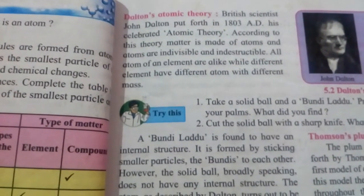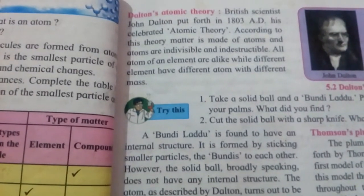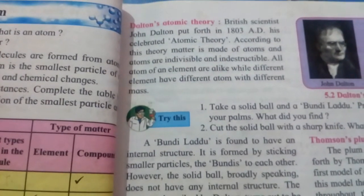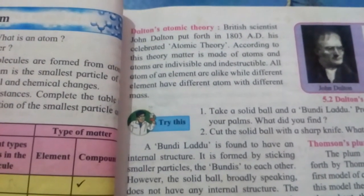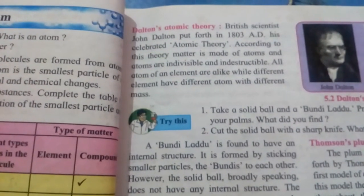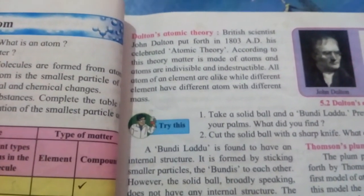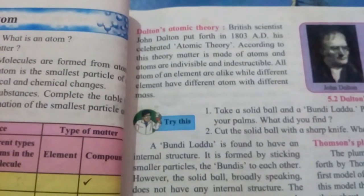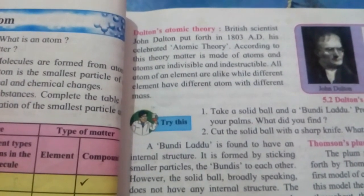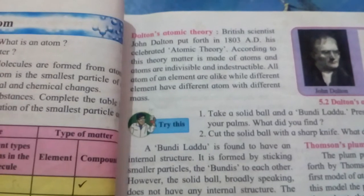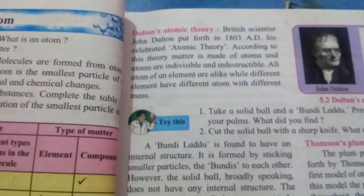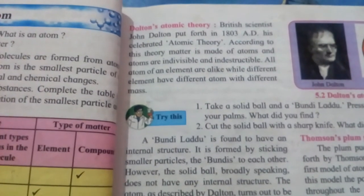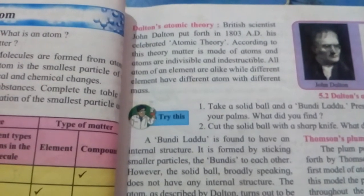Remember three to four key statements of Dalton's Atomic Theory. Statement one: the atom is the smallest particle of an element or matter; it is indivisible, meaning it cannot be divided further and cannot be destroyed. Statement two: atoms of the same element are similar, while atoms of different elements are different in their properties and mass.